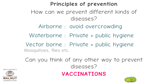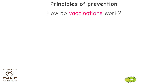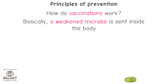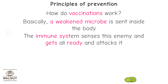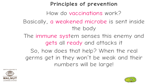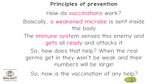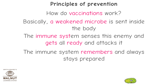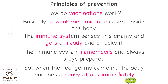Can you think of any other way to prevent diseases? Vaccinations. How do vaccinations work? Basically, a weakened microbe is sent inside the body. The immune system senses this enemy, gets all ready, and attacks it. When the real germs get in, they won't be weak and their numbers will be large. How is the vaccination of any help then? The immune system remembers and always stays prepared. So when the real germs come in, the body launches a heavy attack immediately.